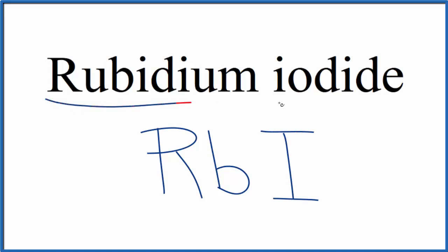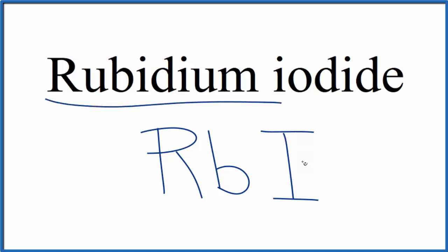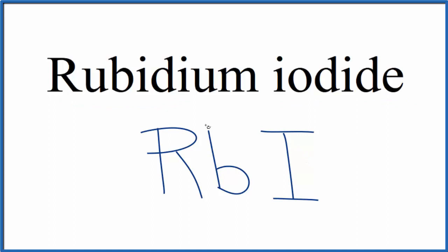Because rubidium is a metal and iodine is a non-metal, this is going to be an ionic compound, so we need to think about charge. If we look up rubidium on the periodic table, it's in group 1, so it'll have a 1+ ionic charge. Iodine forms the iodide ion — it's in group 17, sometimes called 7A — so it'll have a 1− ionic charge.